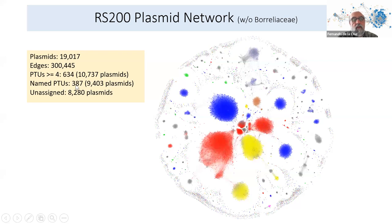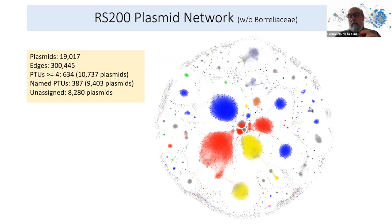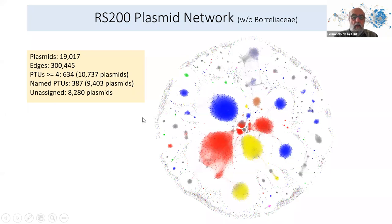We have decided to name only those PTUs with 10 or more plasmids, which is still about half of the total. Very small PTUs with only four or five members are not so stable — in a new classification they sometimes get attached to another one. But this is already a huge atlas of PTUs across the bacterial kingdom.